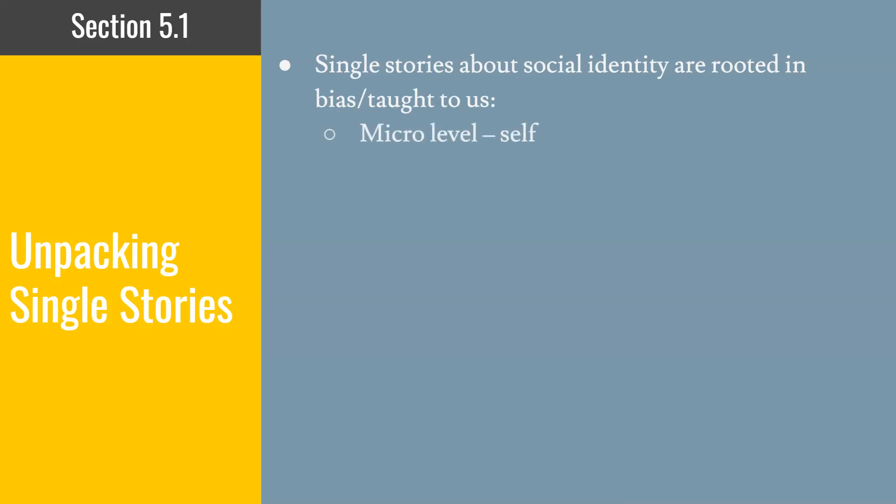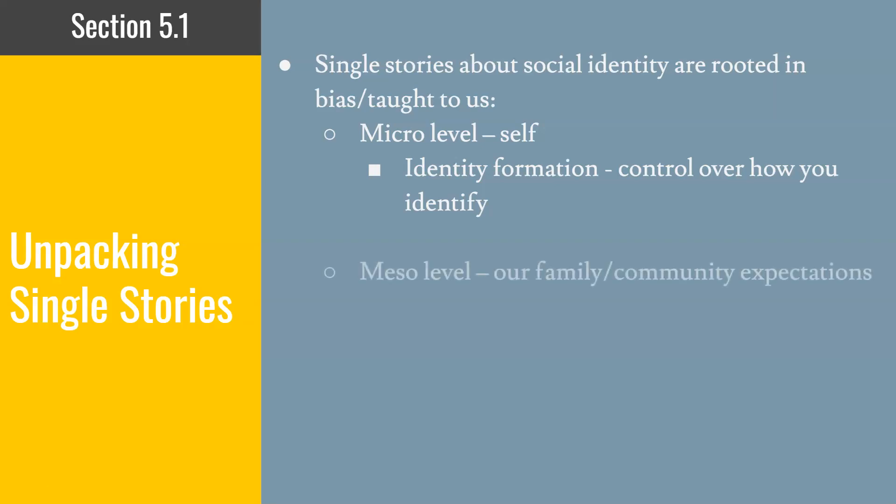Single stories are about social identities and are rooted in bias that is taught to us. This starts at the micro level with the self — we as individuals have our own sense of how we identify ourselves, and that's where we have the most control. Thinking about the social identity groups, some of your identities may be more important to you — maybe your race, your gender, or your sexual orientation — and those are things that will show up at the top level. That is how you see yourself, and it is in that identity formation where you have the most control.